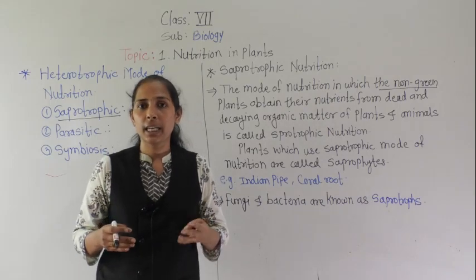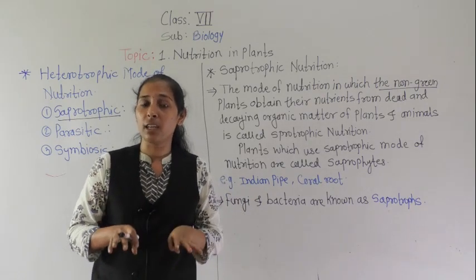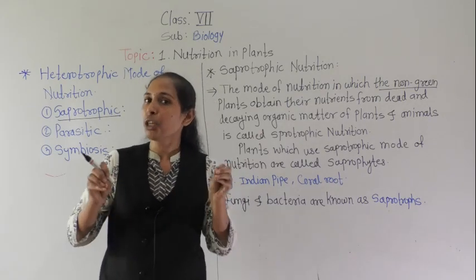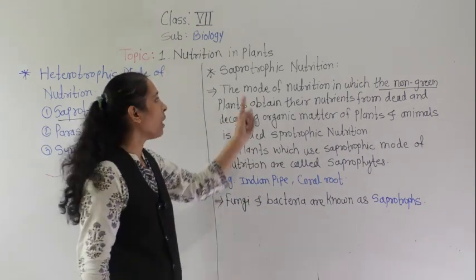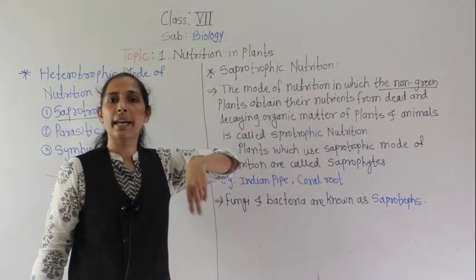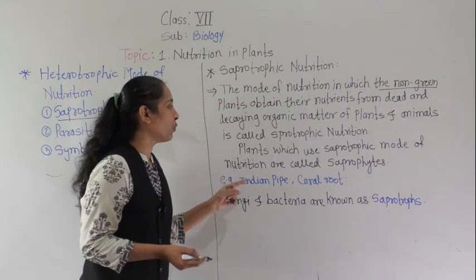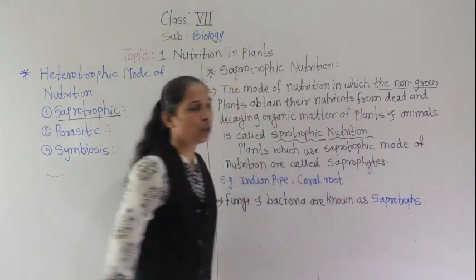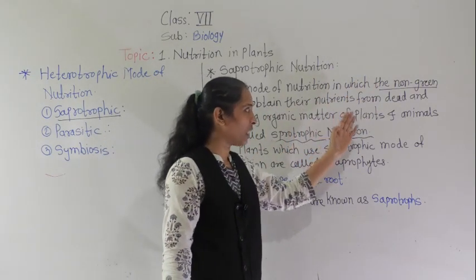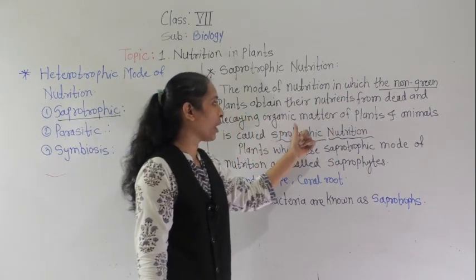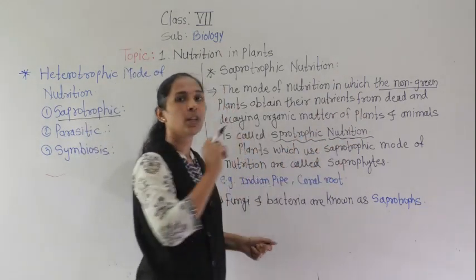After a certain time, that dead plant or animal body is not there anymore — it gets decomposed and decayed with the help of certain types of bacteria and fungi. From this dead and decaying matter, non-green plants take their nutrients, and that mode of nutrition is called the saprotrophic mode of nutrition.